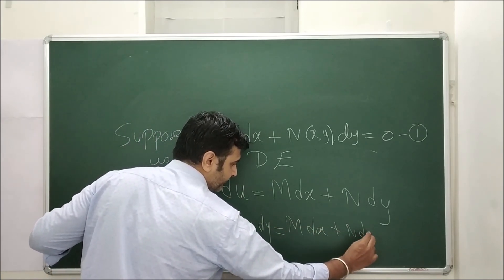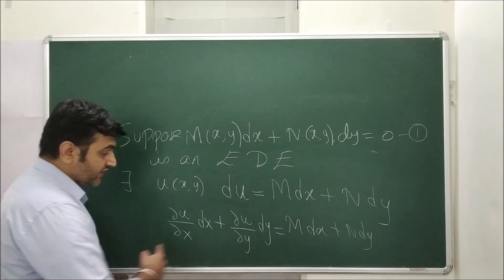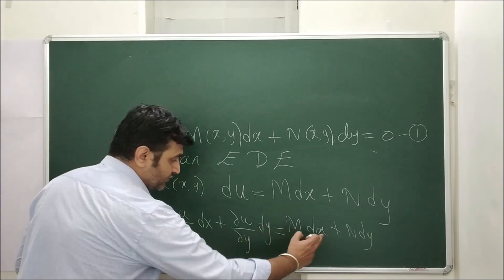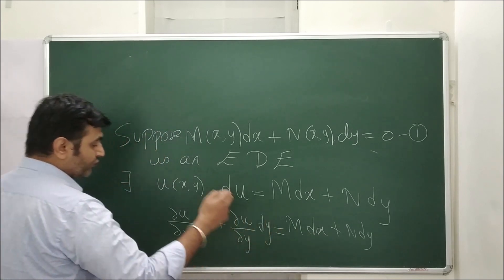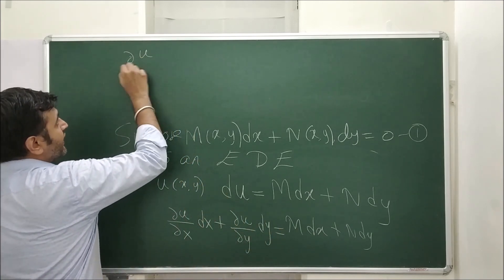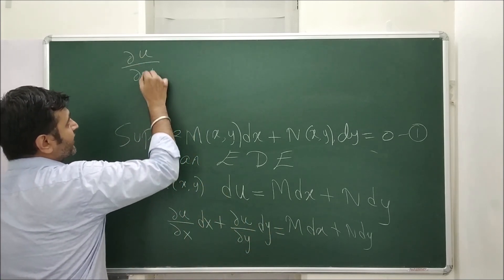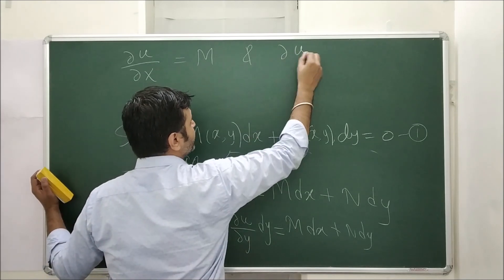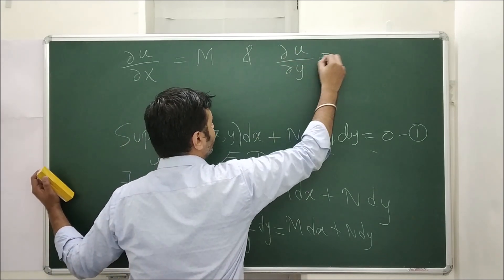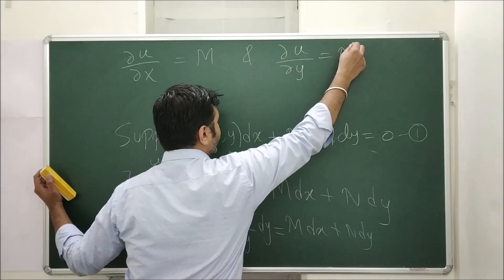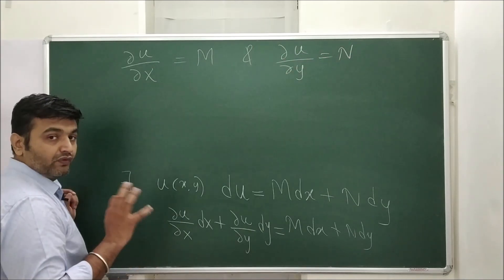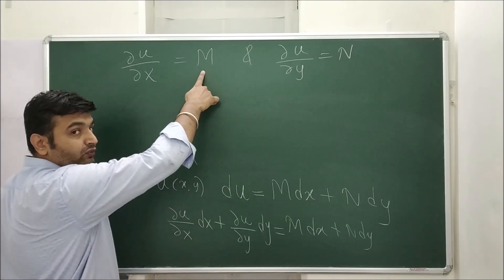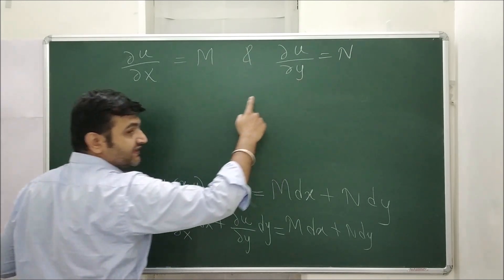Now equating the coefficients: equating the coefficient of dx gives ∂u/∂x = M, and equating the coefficient of dy gives ∂u/∂y = N. What we want to prove is that ∂M/∂y = ∂N/∂x.